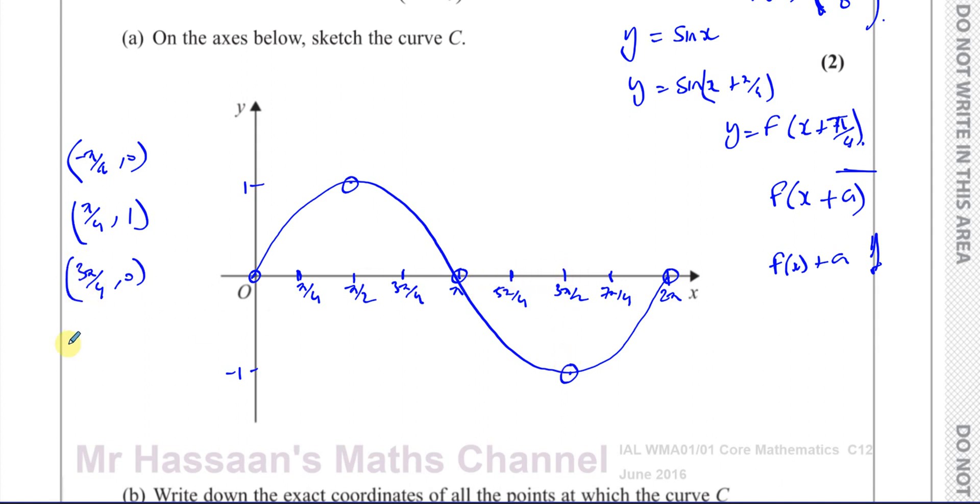And the point 3 pi over 2, minus 1 is going to be 5 pi over 4, minus 1. And the point 2 pi is going to be 7 pi over 4, 0. So everything moves basically like this. It's going to be something like this now. So all these points move to the left by pi over 4 units.